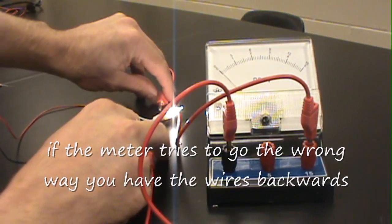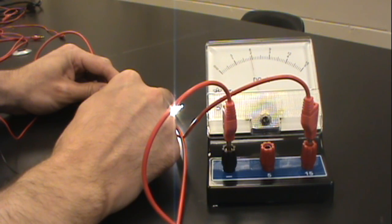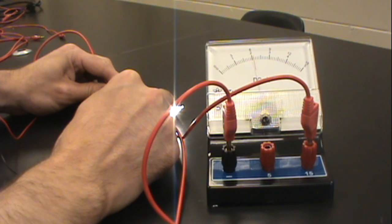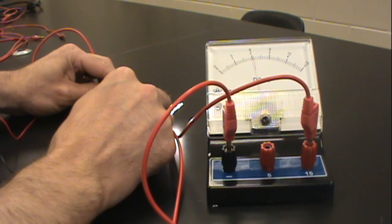And we should be able to see there. And when I make this connection in parallel, you can see that the meter goes up and reads just over 6 volts. That looks like 7.5 and about 6.2, 6.3 volts.